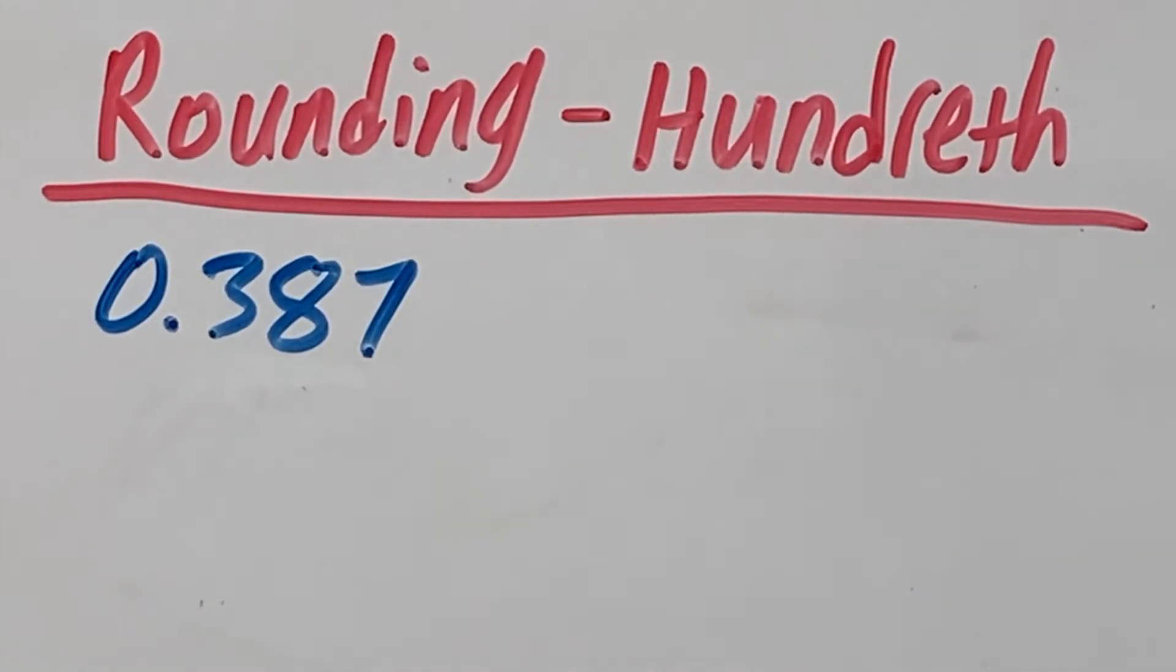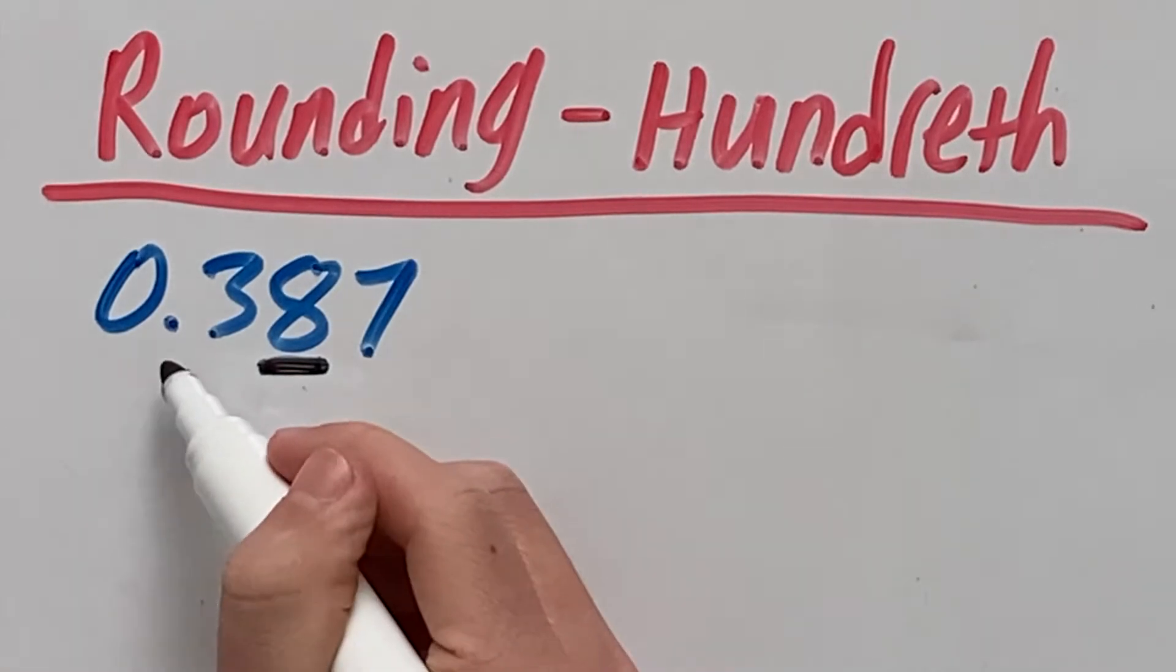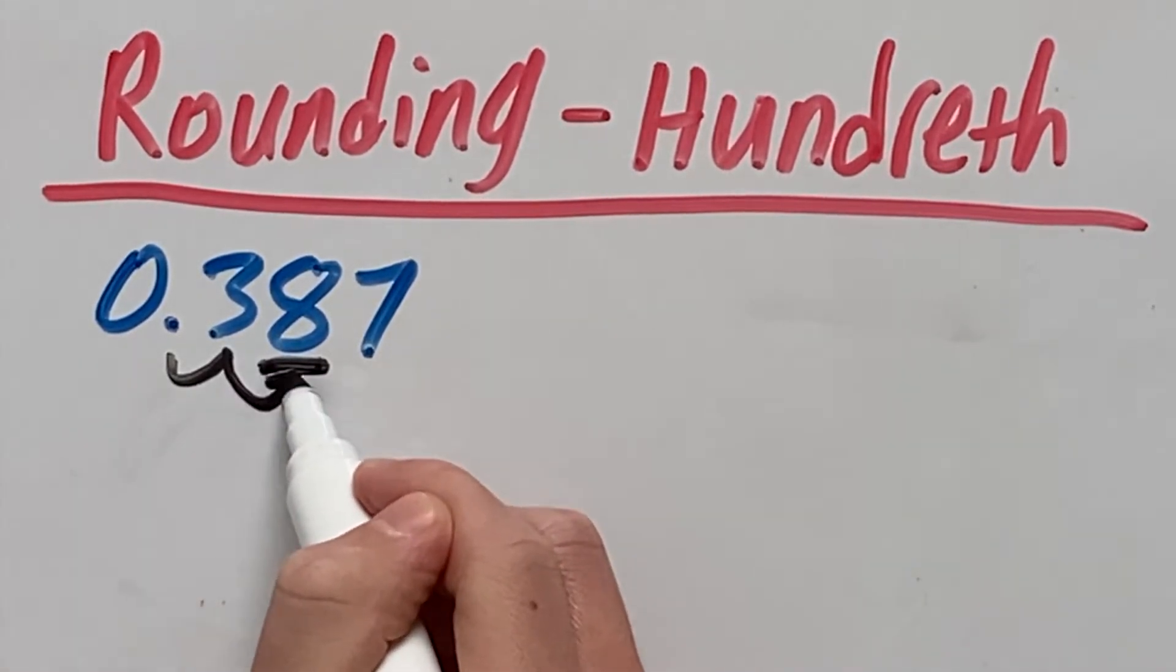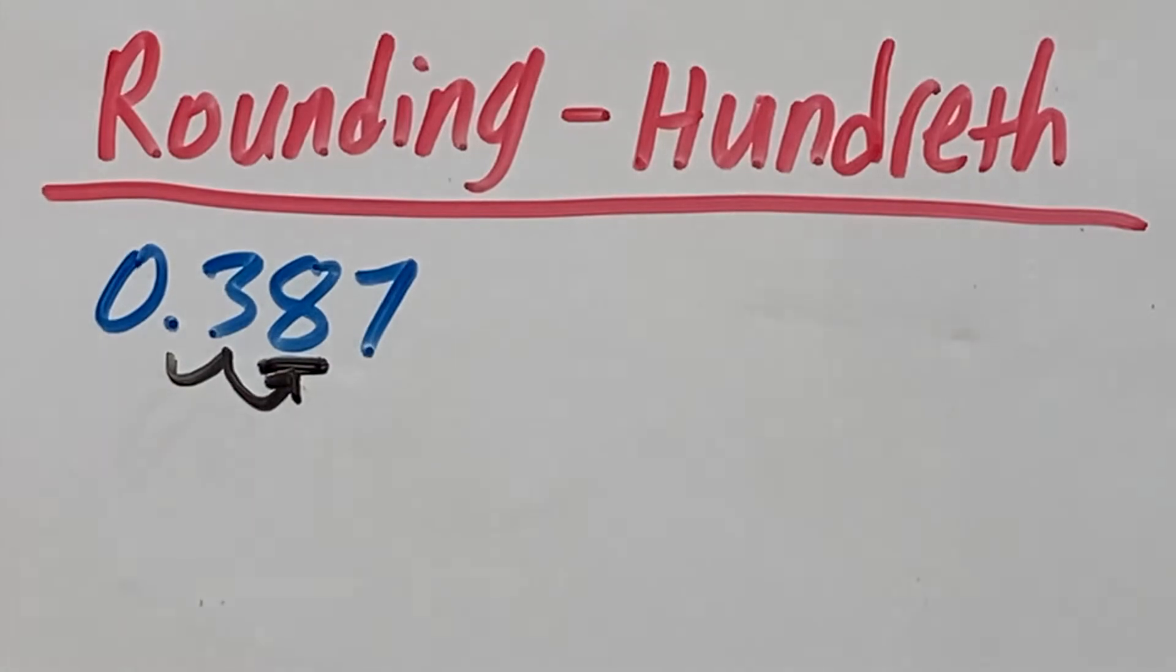The first thing you want to do is identify where the hundredth place is. In this case, the hundredth place is the 8. Always remember, the hundredth place can be found by moving two numbers to the right of the decimal place. Here's the decimal. If we move two numbers, we have 3 and then 8, which is our hundredth place.